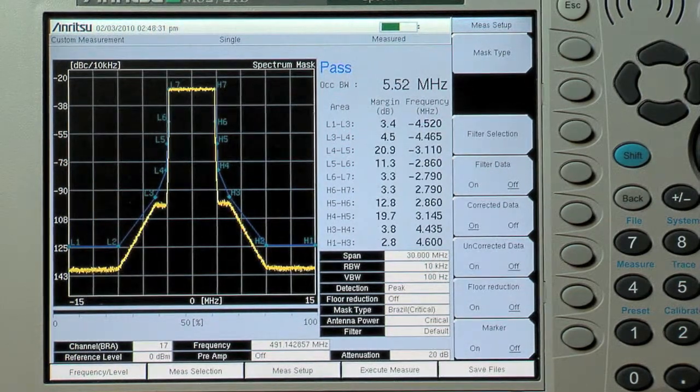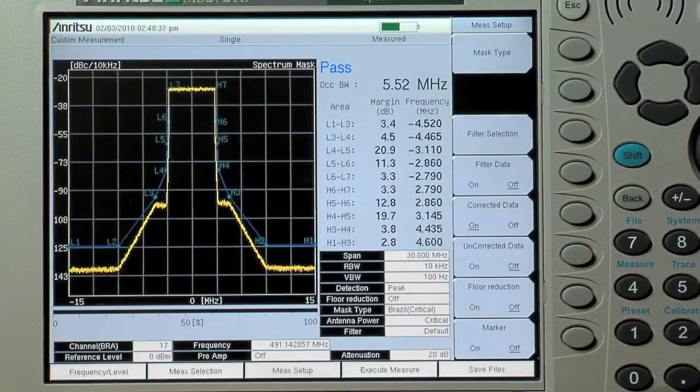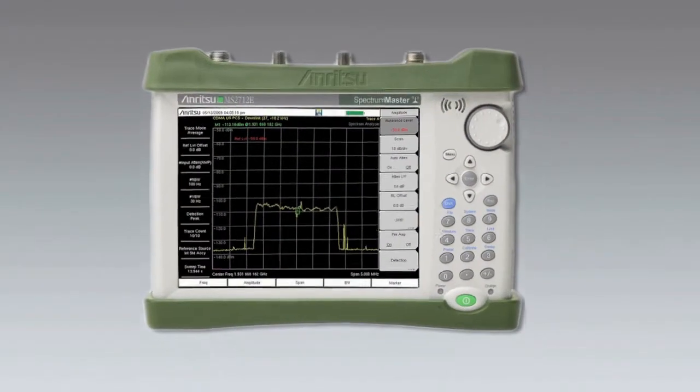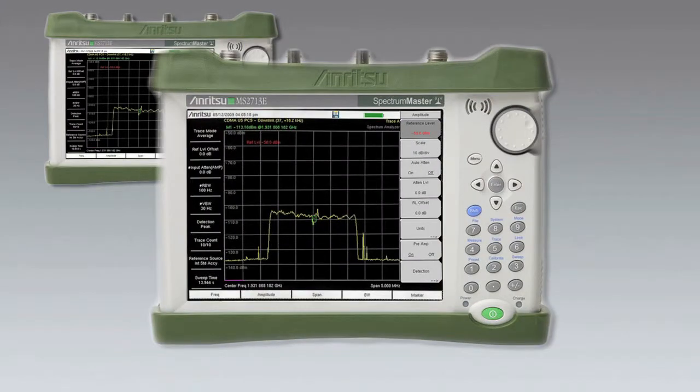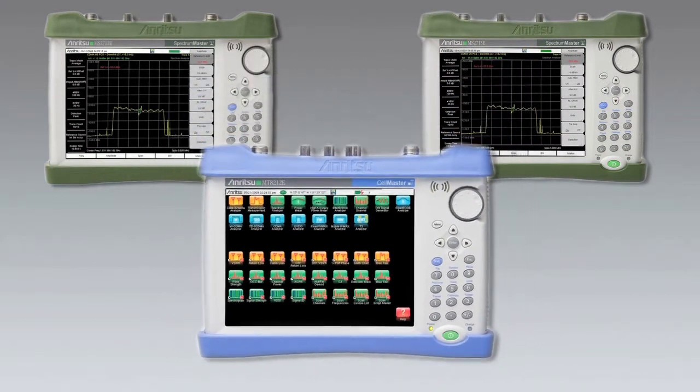However, Anritsu handheld analyzers give you the ability to check whether transmitters are operating within the stringent spectrum mask demands. The Anritsu MS2712E, MS2713E Spectrum Masters, and MT8212E Cell Master